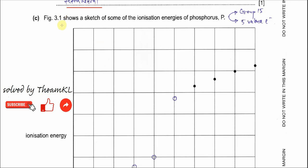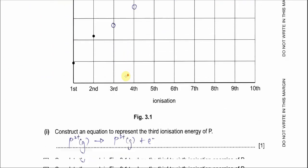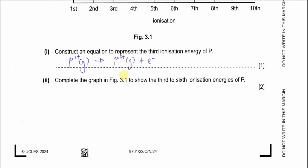Part C: Figure 3.1 shows a sketch of some of the ionization energies of phosphorus. Phosphorus is group 15 with 5 valence electrons. Part C1: Construct an equation to represent the third ionization energy of phosphorus. The starting species must be the phosphorus 2+ gaseous ion. P²⁺(g) releases one electron and forms P³⁺(g). This is the required equation.